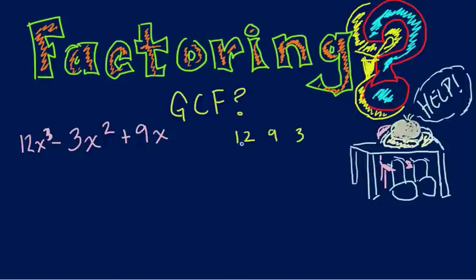What big number goes into all three of these? Well, 3 goes into 3, 3 goes into 9, and 3 goes into 12. Since 3 is already the smallest, there's no other bigger number that goes into 3 — we can't divide 4 into 3. So we know that 3 goes into all three of these numbers: 12, 9, and 3. That's our greatest common factor. So we're pulling out a 3.